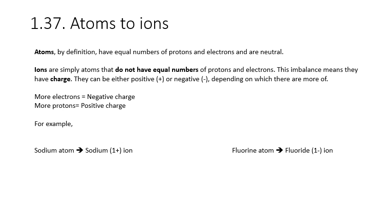What is an ion? An ion is essentially a special type of atom. Atoms by definition have equal numbers of protons and electrons, and they're therefore neutrally charged — all of the positives are cancelled out by all of the negatives. Ions are simply atoms that don't have an equal number of protons and electrons. They are imbalanced and this gives you an overall charge. If they have more electrons than protons, they have more negatives than positives and will be negative. If they have more protons than electrons, they'll be positive.